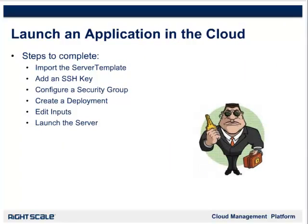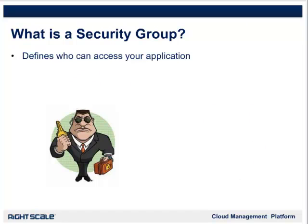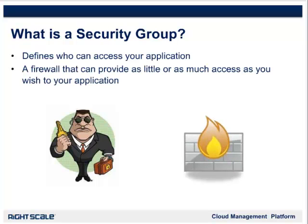Next, let's take a look at creating a Security Group. A Security Group defines who can access your application once it's up and running in the cloud. A Security Group is essentially a firewall that can be configured to provide as little or as much access as you want to clients accessing your application. By default, when you create a Security Group for an application, there are no permissions to access the application. You can think of that as a firewall that no one can get through until you add access. So for our WordPress blog, if we just created a Security Group and didn't configure it, no one would be able to even view the blog.